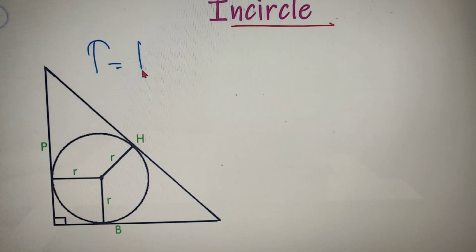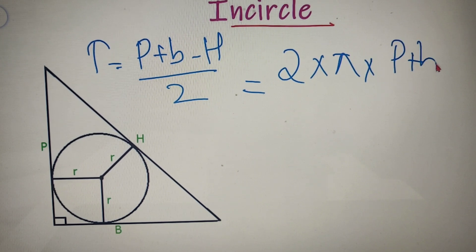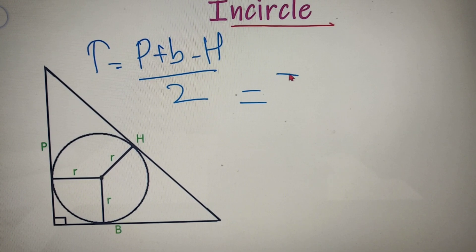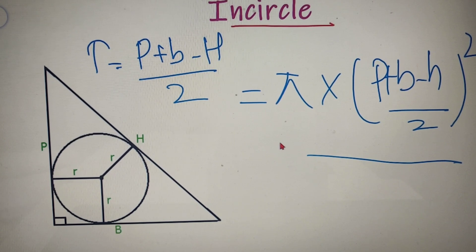With the incircle radius r = (P + B − H) / 2, the circumference of the incircle equals 2πr = π(P + B − H), and the area equals πr² = π((P + B − H) / 2)². Rather than memorizing these formulas, understand the concept and you can easily calculate every value and solve all related questions.